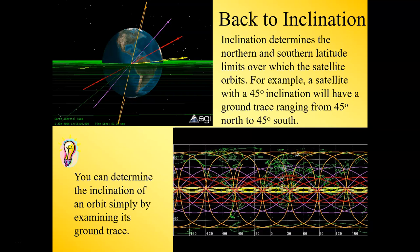Here's a question for you: which one of these might be suitable for a weather satellite? I would say the orange one, because you would want to see the weather over most of the Earth, and that would be the higher inclination orbit.